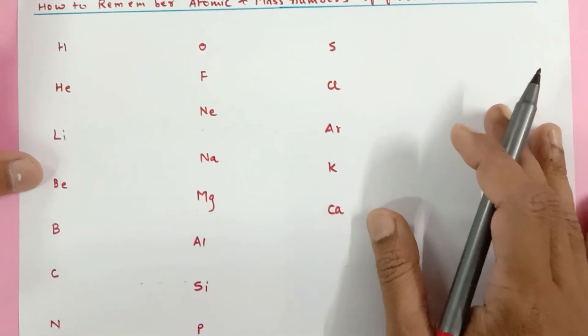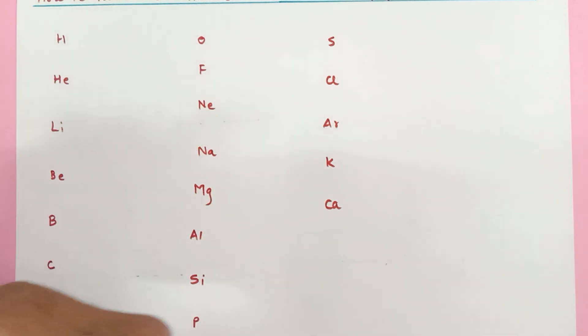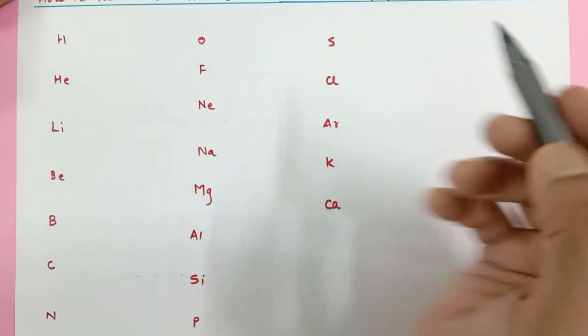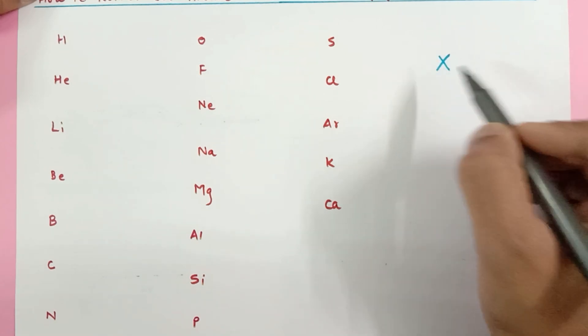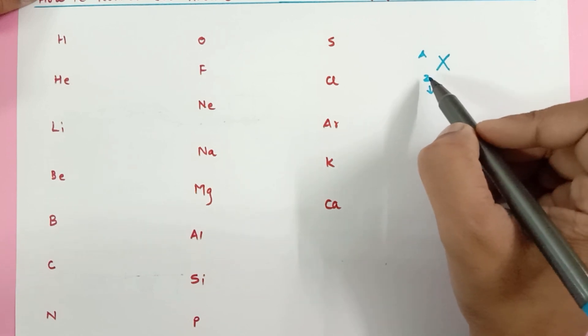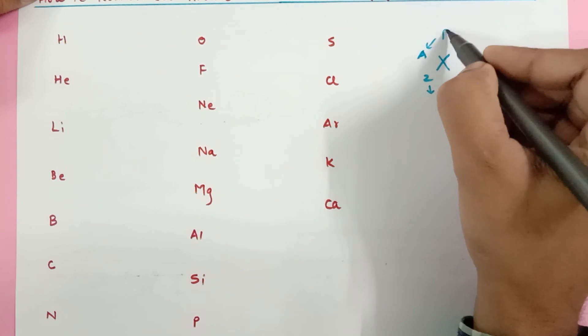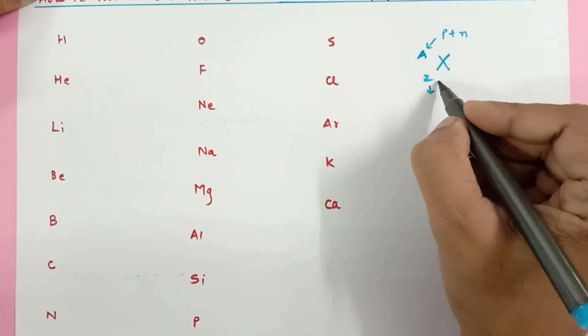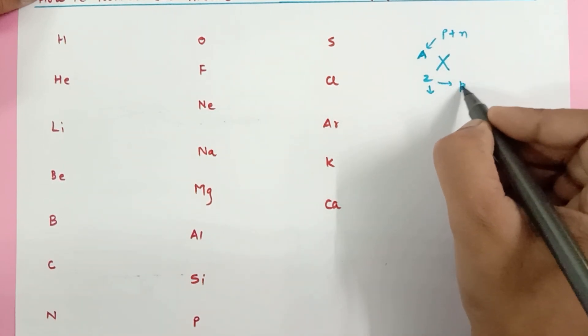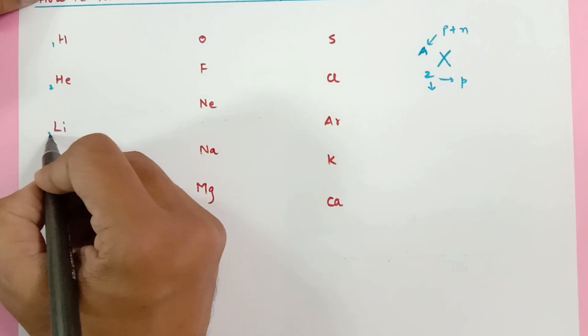Now these are 1 to 20 elements written in sequence. Now what is to be done is we just write down the atomic numbers. We know the atomic number for element X is written like X subscript Z superscript A, where Z is the atomic number written at the bottom and A is the mass number, where A is the sum of protons and neutrons, and Z is the number of protons in the nucleus. It is also equal to the number of electrons in the orbit. So what I'm going to do is just write down the numbers in sequence.